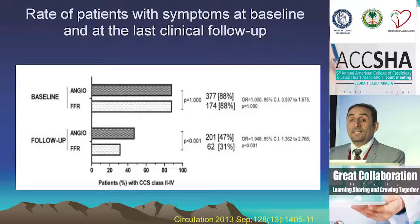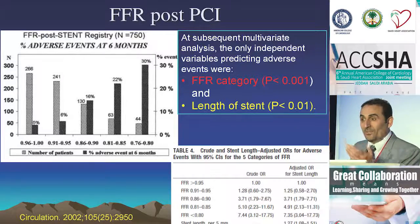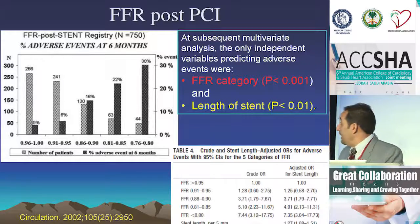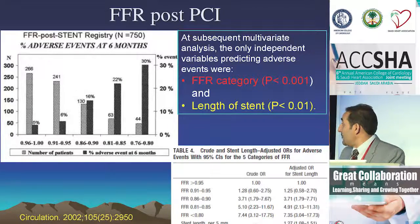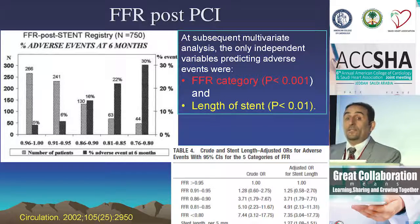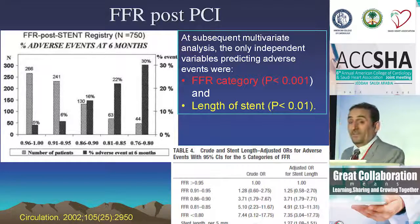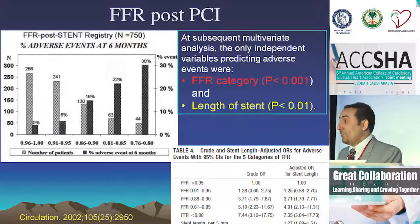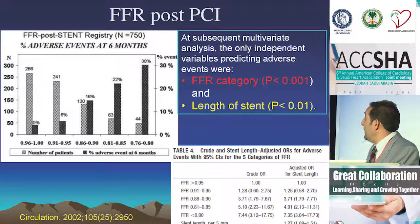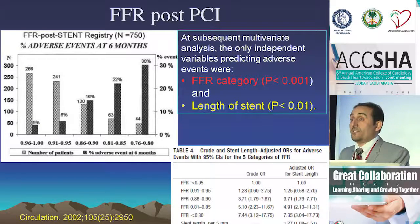Could we also refine our PCI? If you do an FFR post-PCI, would you be able to tell if you did a great job? Dr. Pidgell published this in Circulation in 2002. If you reduced your FFR post-procedure above 0.90, event rates were 5–6%; above 0.95, very well. But if FFR stayed below 0.90, event rates were 16%, going up to 30% if below 0.80. In multivariate analysis, FFR and stent length were the only two independent significant predictors.